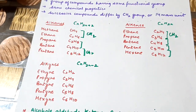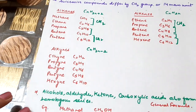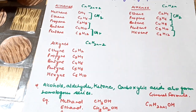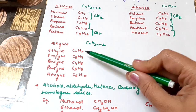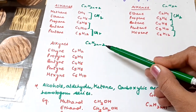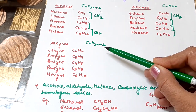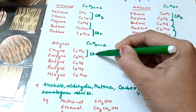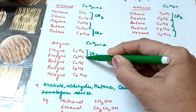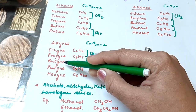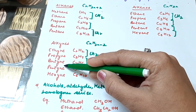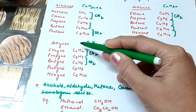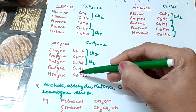And the same applies for alkynes. The general formula for alkynes is CnH2n−2. Here also, successive compounds like ethyne and propyne, propyne and butyne, differ by CH2. So this is the homologous series of alkynes.